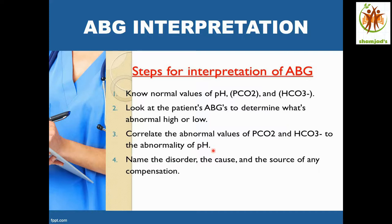Look at the pH first — whether it is acidosis or alkalosis — and then correlate with the abnormal values of PCO2 and bicarbonate. From this we diagnose whether it is respiratory acidosis, metabolic acidosis, respiratory alkalosis, or metabolic alkalosis.